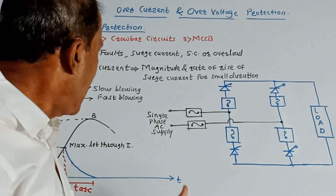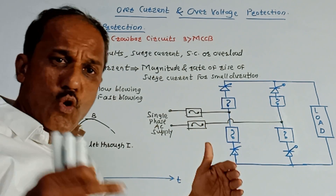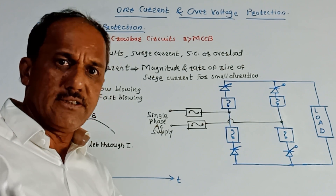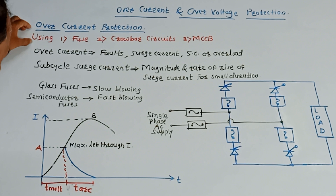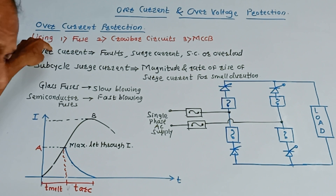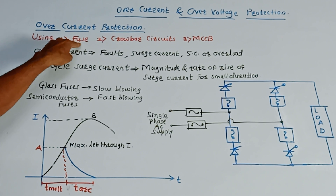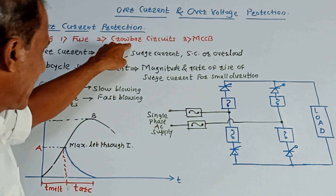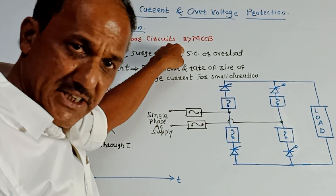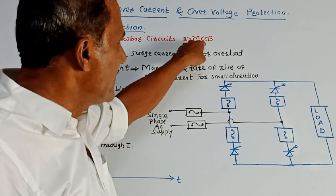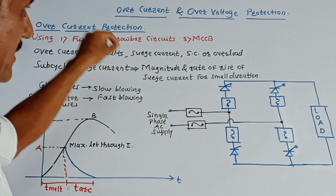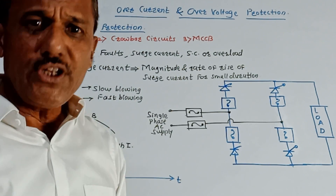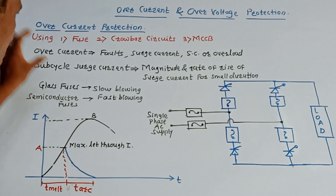From the exam point of view, we may expect a question like: what are different overcurrent protection techniques used in power devices and explain anyone in detail. Different overcurrent protection techniques are: we can protect the power devices by placing a fuse, or second, crowbar circuits, or third, MCCB unit. Basically MCCB is modulated case circuit breaker.